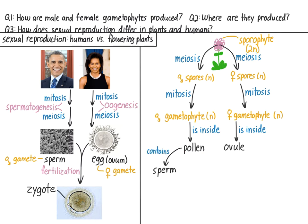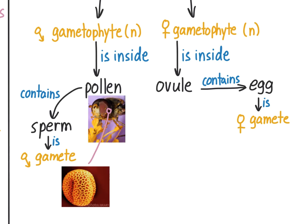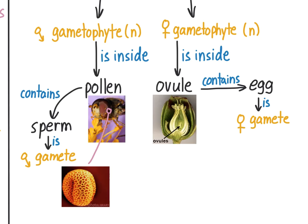In plants, the pollen contains the sperm — the male gamete. The ovule contains the female gamete, the egg. Here is a picture of a bee on a flower — you can see the pollen rubbing off on it and how tiny the individual pollen grains are. Here is a picture of a smaller flower that's been cut open, and you can see the ovules. The ovules are much bigger than the sperm and can be seen with the naked eye. Note that pollen and ovules themselves are not the gametes; they are the structures that hold the cells making up the male and female gametophytes, including the sperm and egg.